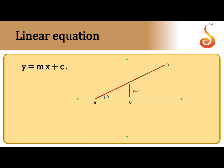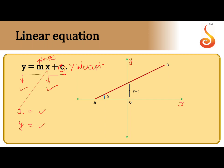First, I will take the straight line. The equation of a straight line is also called a linear equation: y equal to mx plus c. Here x and y are variables. When I assign the value of x, the value of y will change according to this equation. m is called the slope of the straight line, and c is called the y-intercept. When I plot this straight line on x and y axes, I keep applying values of x to get values of y.